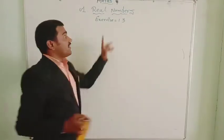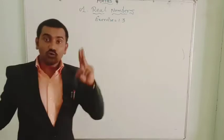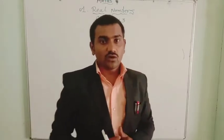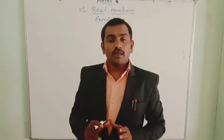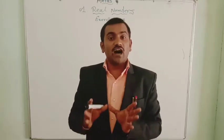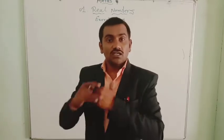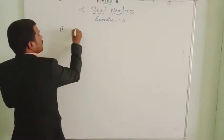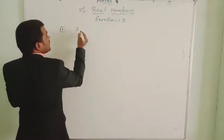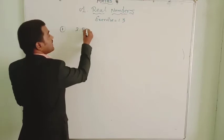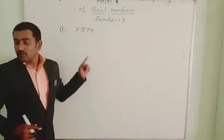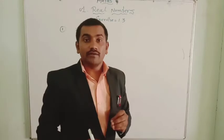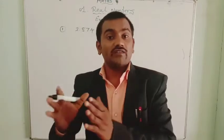In exercise 1.3 we have two problems. Let me solve them using two different methods. The first problem is to visualize 2.874 on the number line using successive magnification.